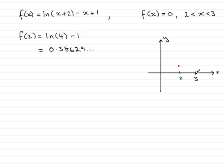Now what I'm going to do is work out what the value of f(3) would be when we put x equals 3 into the equation. So let's do f(3). So that would be the natural log of 3 plus 2 which would be the natural log of 5, and then minus 3 add 1 would be minus 2.